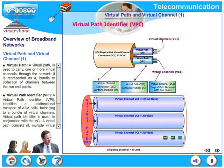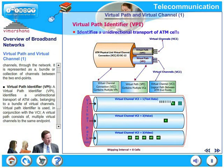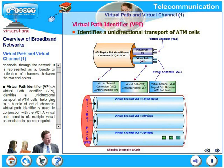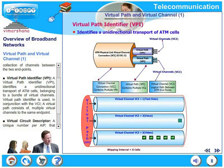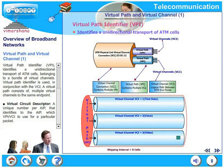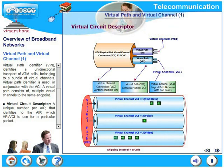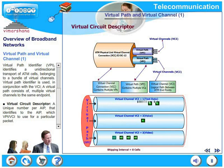A Virtual Path Identifier (VPI) identifies a unidirectional transport of ATM cells belonging to a bundle of Virtual Channels. VPI is used in conjunction with VCI. A Virtual Path consists of multiple Virtual Channels to the same endpoint. The last concept is the Virtual Circuit Descriptor: a unique number that identifies which VPI or VCI to use for a particular packet.